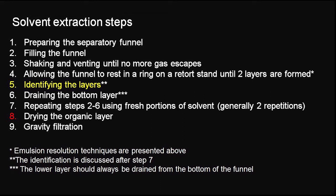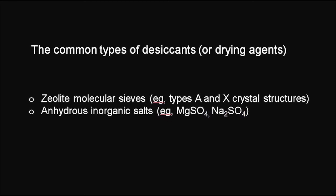Water can be removed from the organic layer by treating it with a suitable desiccant. Desiccants are drying agents that absorb water due to their chemical and physical properties. The two common types of desiccants are zeolite molecular sieves types A and X and anhydrous inorganic salts such as magnesium sulfate and sodium sulfate.